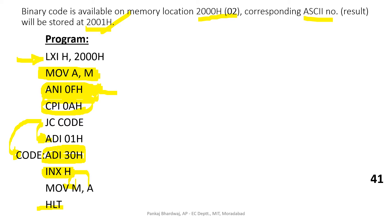If the carry does not come, we move to the ADI instruction. Note: it should be ADI 07, not 01 — let me correct that. It's ADI 07 because we add 7 immediately. So if the number is less than 10, we add only 30; if the number is 10 or greater — any hex character like A, B, C, D, E, or F — we add both 7 and 30, which equals 37.